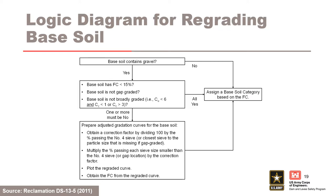Logic diagram for regrading base soil. This logic diagram is used to determine which base soils require regrading and the operation used to achieve the regrading. When a soil does not contain any gravel or particles larger than the number 4 sieve, regrading is not required. If the soil does contain gravel, it still may not require regrading if it meets all three properties listed. If one or more of those properties are not met, the soil should be regraded using the procedure shown. If the maximum particle size is larger than 4.75 millimeters, regrade so that the maximum size is 4.75 millimeters. If the base soil is gap-graded, it must be regraded on the closest sieve to the particle size that is missing.